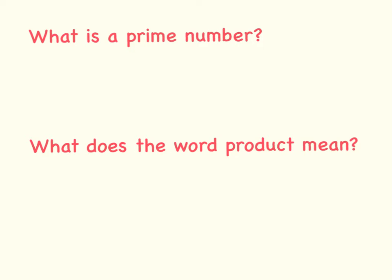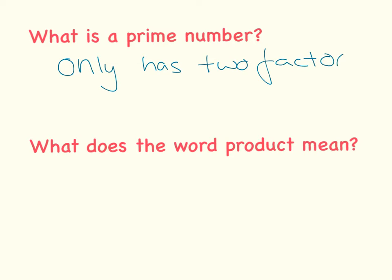To begin with prime factorization, we first meet the keyword 'prime' and ask ourselves: what is a prime number? A prime number only has two factors, and those two factors are always one and itself. The very first prime number, which is really important, is two. Then we have three, five.